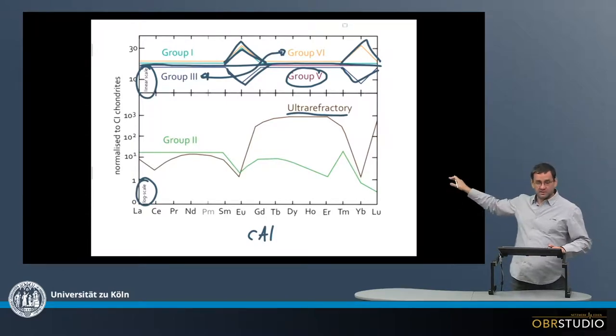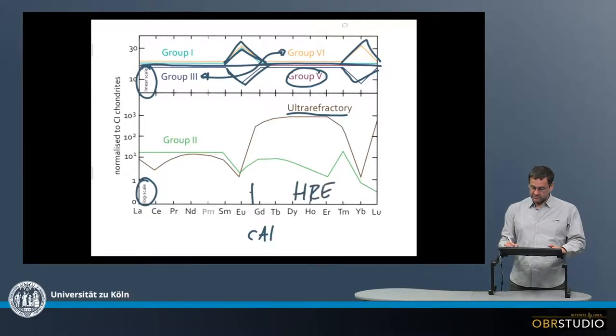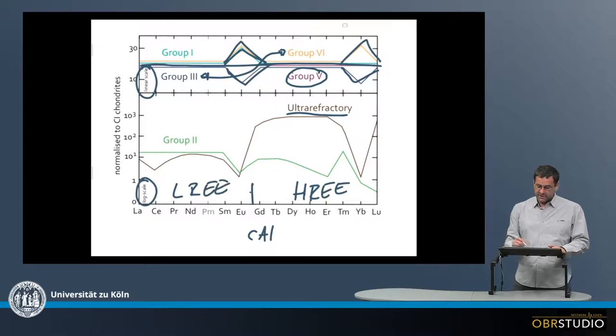Now in the lower part with the log scaling, we can discriminate two patterns here. The first thing we see is that we have the heavy rare earth elements and the light rare earth elements, and there's a fractionation between the heavy and light rare earth elements.